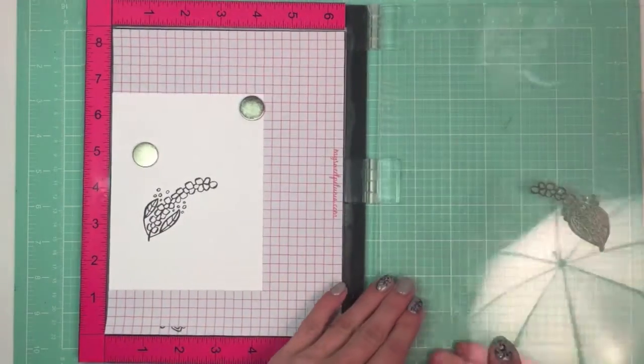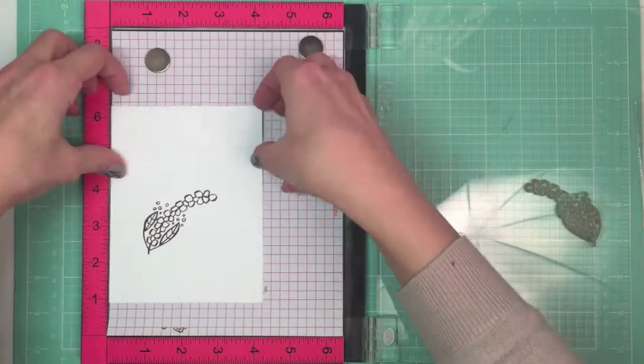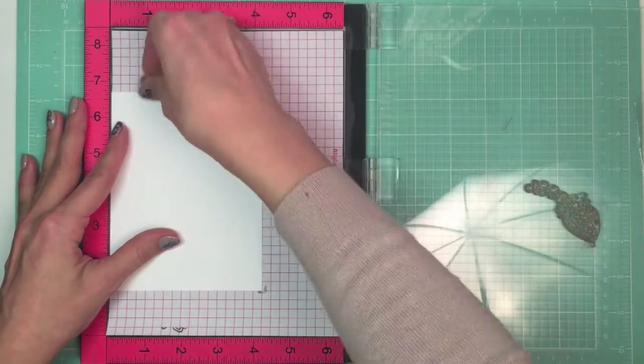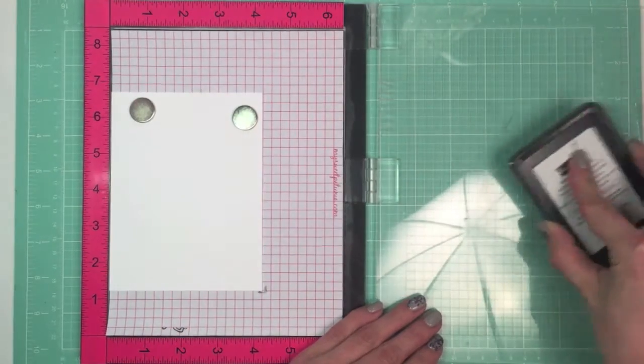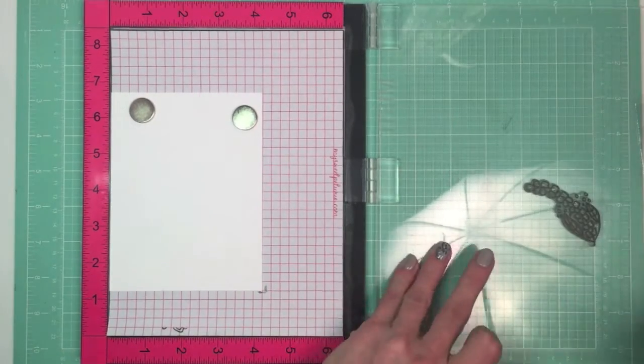I took two panels of white cardstock of the same size and made a note where I positioned them. I'm positioning them in the middle of the MISTI because I knew that some of my images will go behind the borders of the paper.